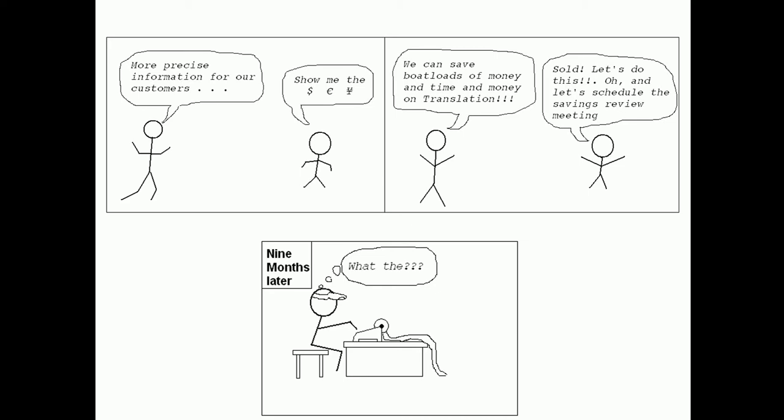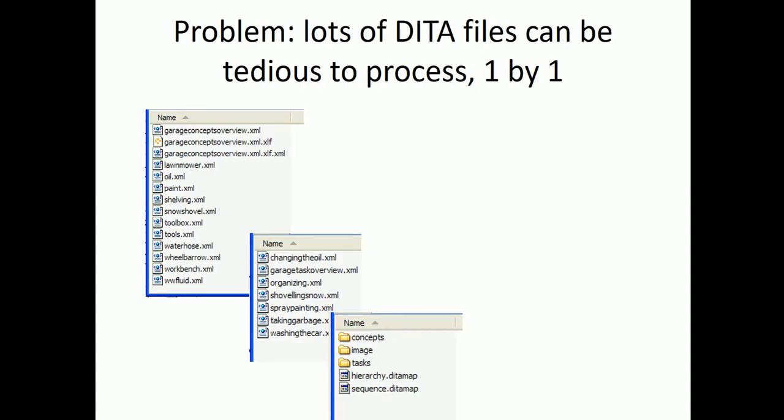But nine months later, what often happens is we don't see the savings. In fact, sometimes it can go the other way, and the boss will be really confused and probably upset. The problem — the paradox — is that we have a lot of DITA files that can be tedious to process one by one.